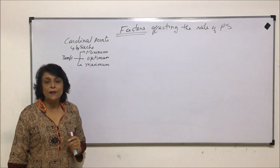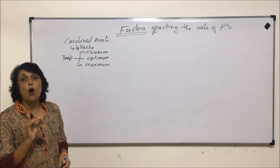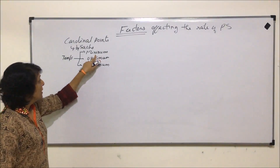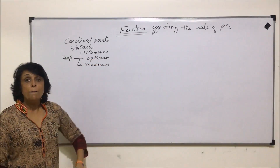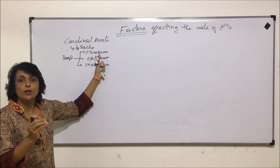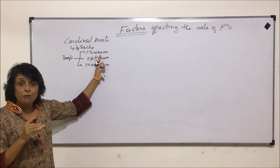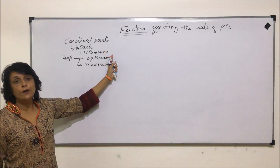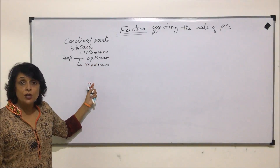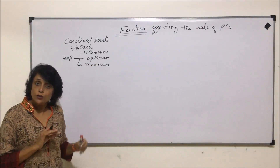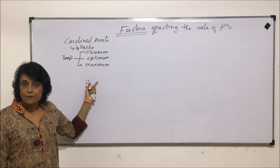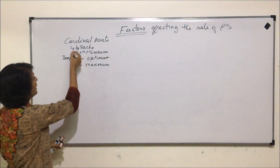We have seen in the case of C3 plants, 10 to 20 degrees Celsius is the optimum temperature. Minimum temperature would be that temperature below which the rate of photosynthesis will stop — say 4 degrees Celsius; if temperature falls below 4, photosynthesis stops. Maximum would be that temperature beyond which photosynthesis would also stop. So for every factor, we have a minimum, an optimum, and a maximum.